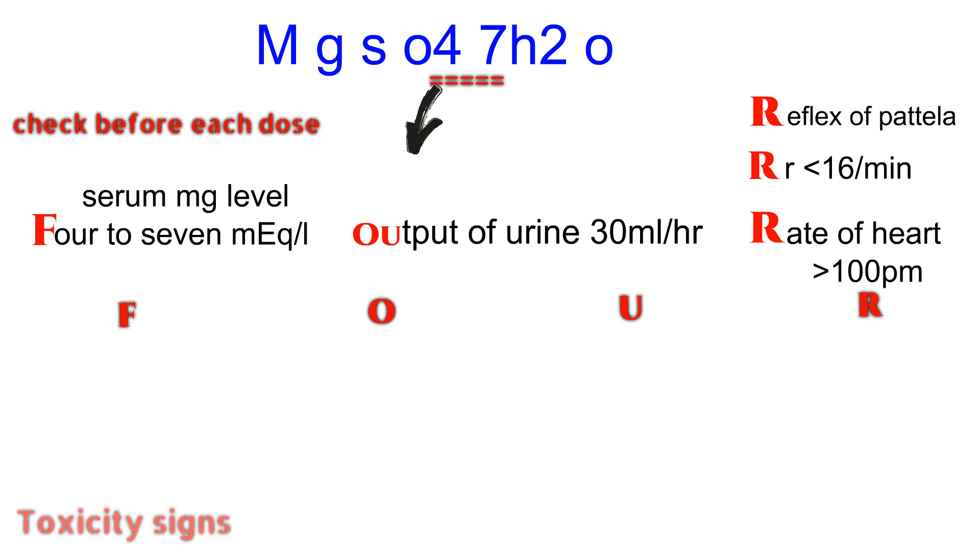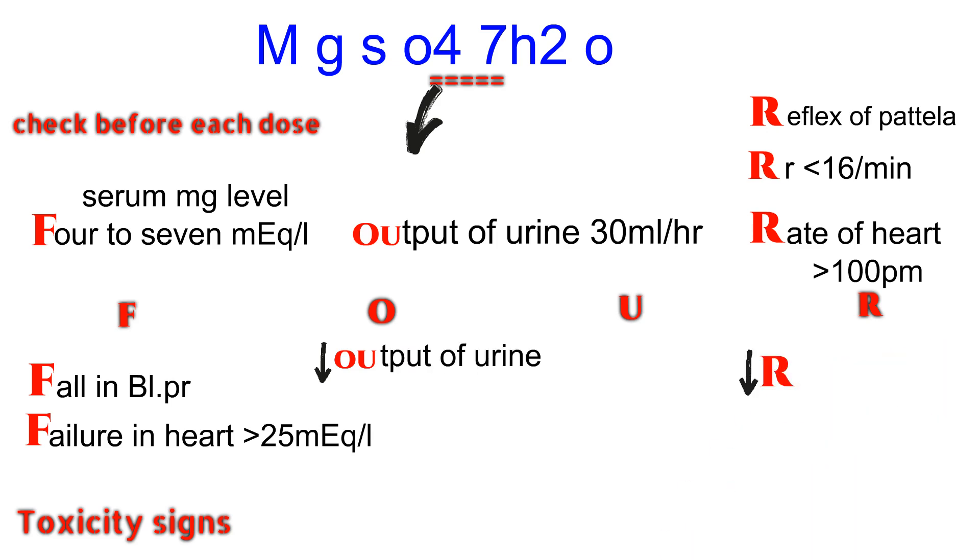Toxicity signs: Fall in blood pressure, failure in heart conduction at level of 25 milliequivalents per liter. The output of urine decreased. Rate of respiration decreased at 10 to 15 milliequivalents per liter. Respiratory depression of neonate at a high level after crossing the placenta. The reflex of the knee, patellar reflex, is absent at 8 to 10 milliequivalents per liter.